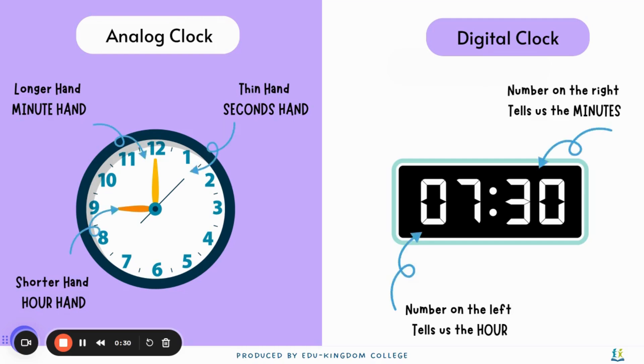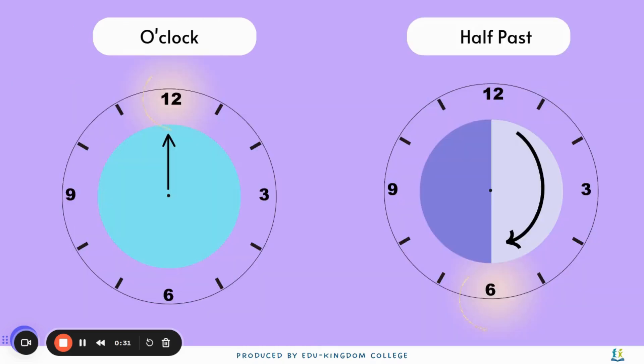Looking at the minute hand — the longer hand — when it's pointing at 12, it will be o'clock, and when it's pointing at 6, it will be half past.